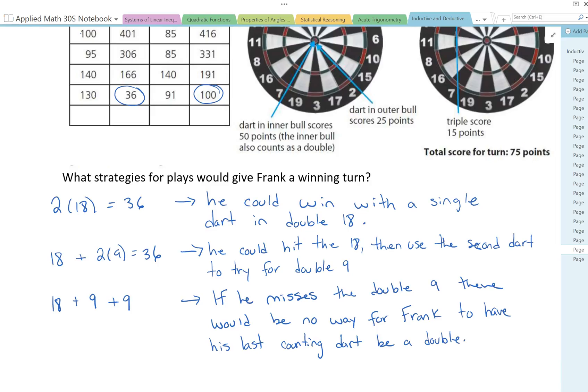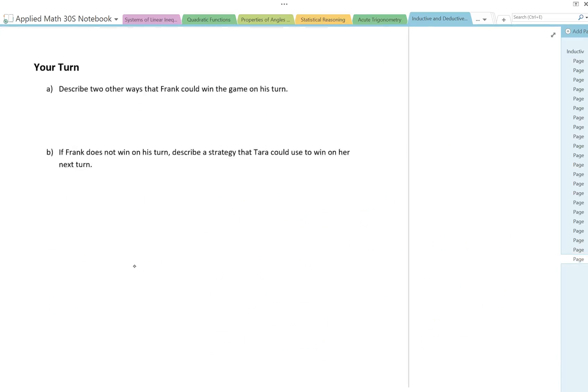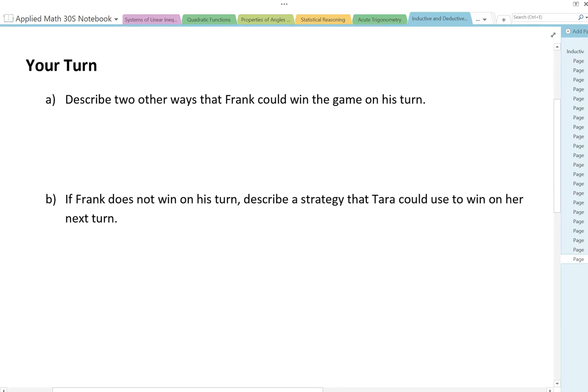Now let's see the next page here. It says describe two other ways that Frank could win the game on his turn. Well he could get double 9 and double 9 again that would give him 36 if there's no stipulations, except for the double on the winning turn. He could get 10 first and then double 13.